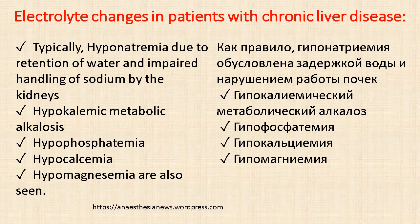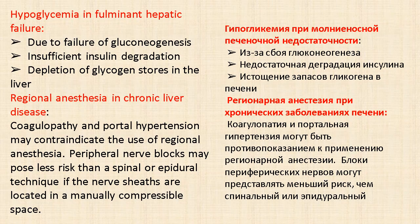Electrolyte changes in patients with chronic liver disease typically include hyponatremia due to water retention and impaired handling of sodium by the kidneys. Hypokalemic metabolic alkalosis, hypophosphatemia, hypocalcemia, and hypomagnesemia are also seen. Hypoglycemia may occur in fulminant hepatic failure due to failure of gluconeogenesis, insufficient insulin degradation, and depletion of glycogen stores in the liver.